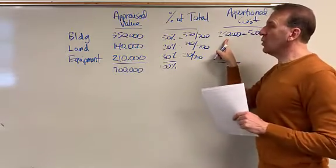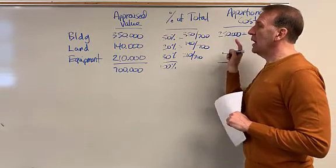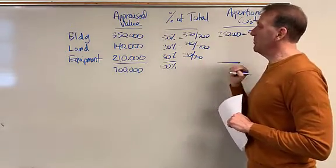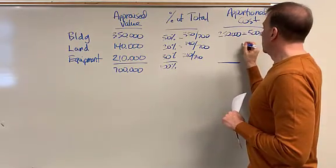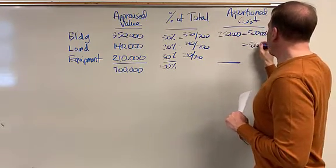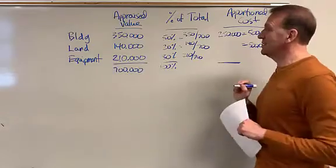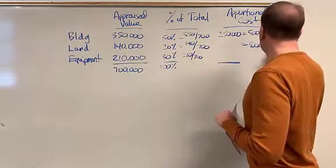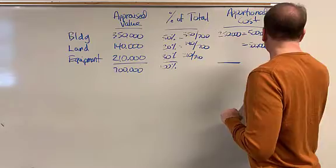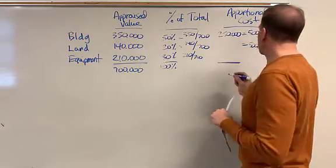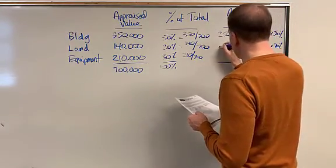The land, we're going to take $500,000, the total cost of this purchase, times 20% of that is going to be allocated to the land. So 20% is $100,000.